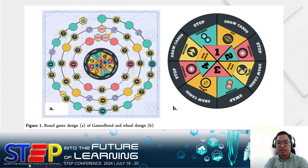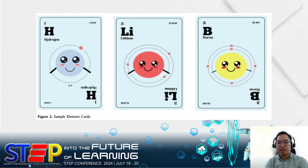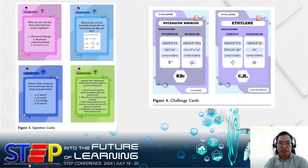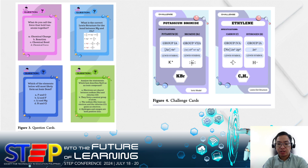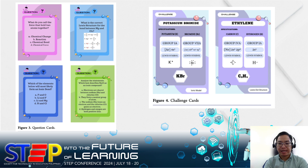Games Bond is a board game that consists of a board, element cards, question cards, challenge cards, and a wheel that provides reinforcement. Players can use the element cards to form a compound and identify its chemical bonding. If the player lands on the question tile on the board, they will need to answer questions about the formation of ionic and covalent bonding. The question cards have varied colors corresponding to Bloom's taxonomy's cognitive domains: pink for remembering, light blue for understanding, dark blue for analysis, and green for application. Challenge cards have two types: the compound model and the Lewis electron dot structure.